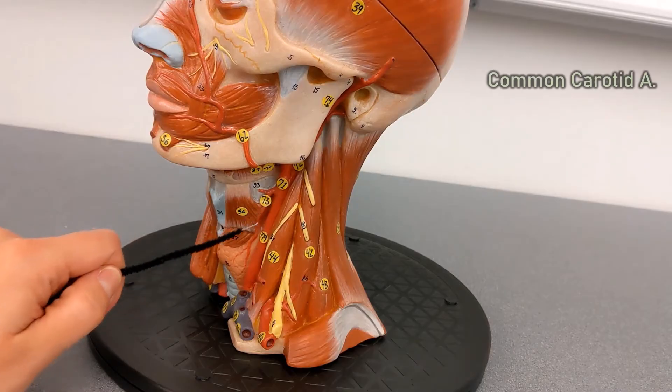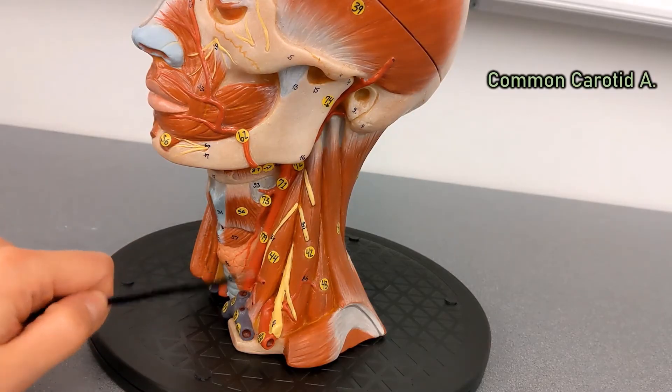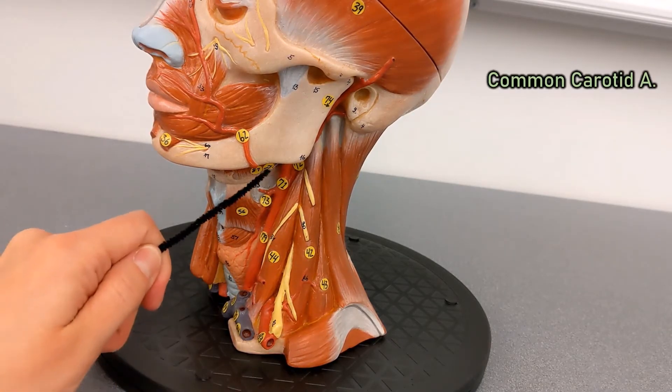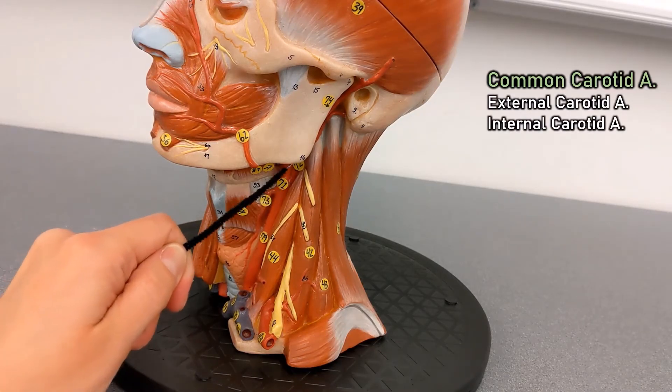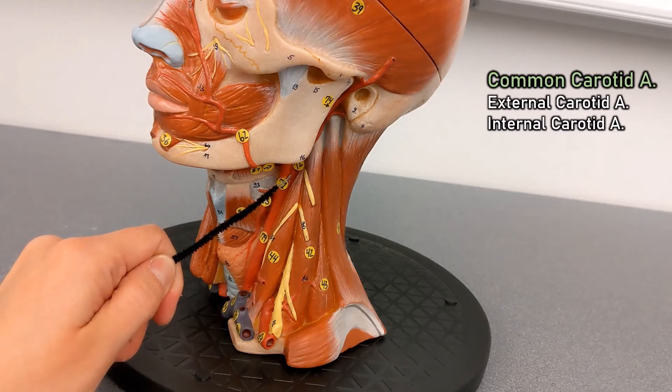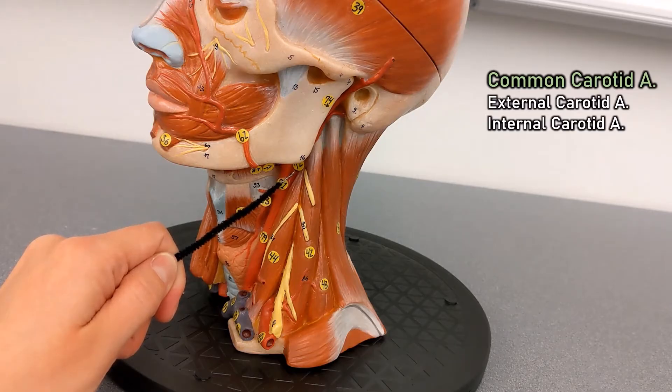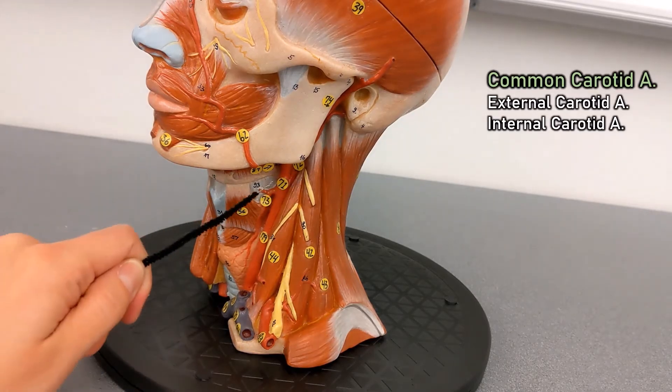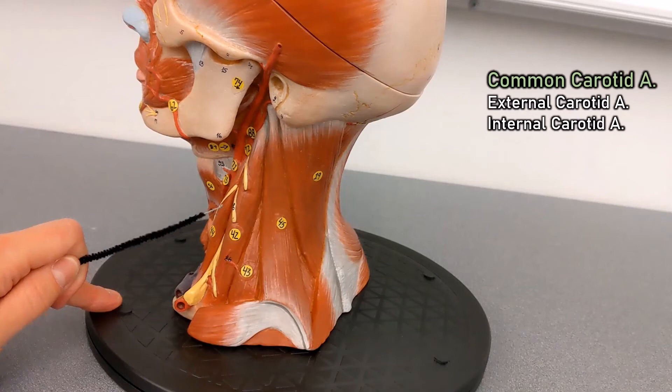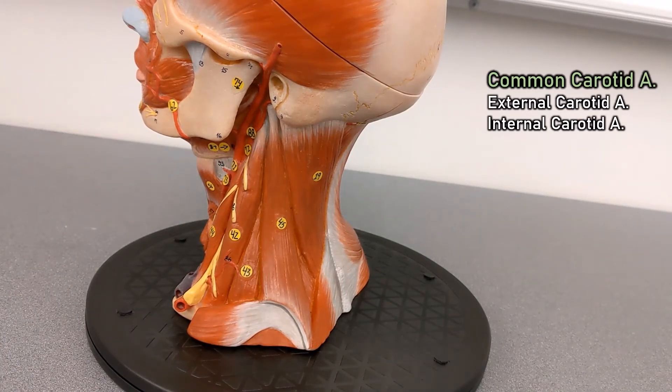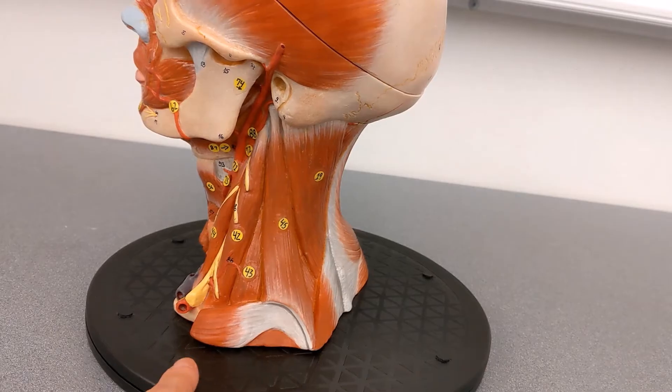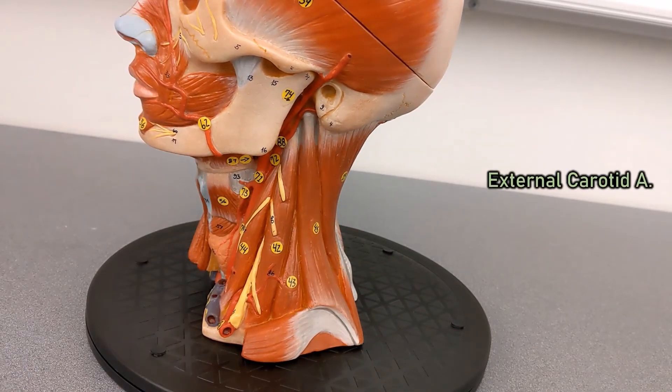The common carotid splits into two branches: the external carotid and internal carotid. The internal carotid is going up into the brain to meet the circle of Willis, so we won't see any more of that on this model. But the external carotid has a lot of branches. We can't see all of them here, but I'll point out the ones we can.